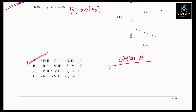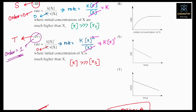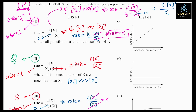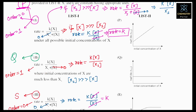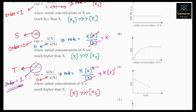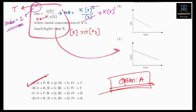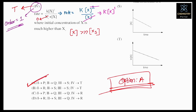This is the solution to JEE Advanced 2022 chemical kinetics. This question can confuse students because of the complex rate laws given. You just have to apply the limiting concentration conditions to simplify the rate law, find the order, and match with the graph. Also remember this is a single-match question. I hope you all understood — if you have any doubt, please comment and subscribe to our channel.